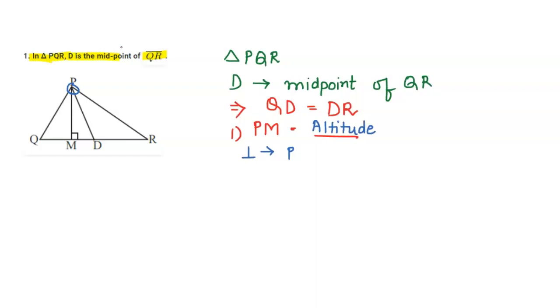In the second part, they are asking what PD equals. Here, PD is the median. A median is a line joining the vertex of a triangle to the midpoint of the other opposite side. P is the vertex and D is the midpoint, so the median is a line joining the vertex to the midpoint of the opposite line.